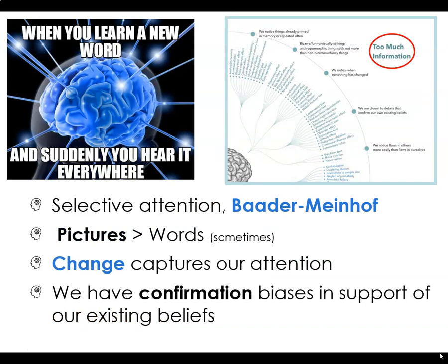The Google effect, also known as digital amnesia, is the tendency to forget information that can easily and readily be found online. According to the first study on the Google effect, people are less likely to remember certain details they believe will be easily accessible online. Next are the biases we as humans make when we have too much information. One of my favorite examples is the Baader-Meinhof phenomenon, related to selective attention — you learn a new word and suddenly you hear it everywhere. We also have confirmation biases that support our existing beliefs.